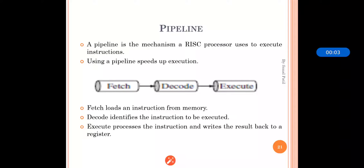In our last section we covered the RISC processor and its design philosophy, which is the basis of ARM. Today we will see the pipeline that is used in RISC. RISC is responsible for providing reduced but very efficient instructions, and to speed up the execution process the pipeline concept is used. Pipeline is a mechanism in which instructions can be executed in a fast way — a mechanism a RISC processor uses to execute instructions.